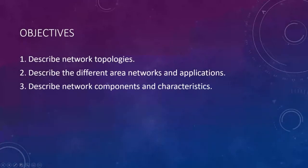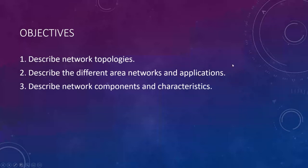We have three objectives in this ILM. The first is to talk about network topologies — the way networks are physically laid out, like streets and avenues. Objective two is to describe the different area networks and applications: personal area networks, local area networks, wide area networks, metropolitan area networks, and things like that.